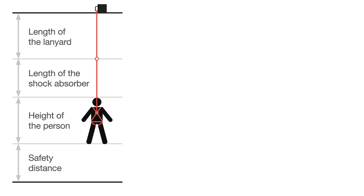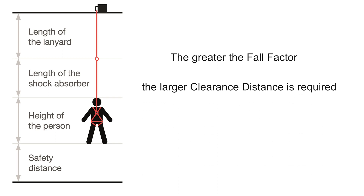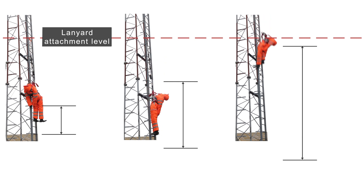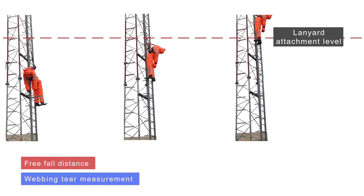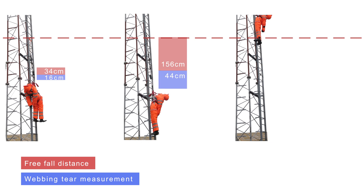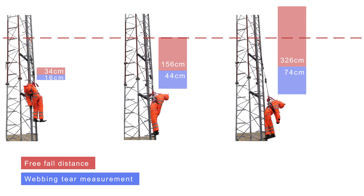In summary, the greater the fall factor, the larger the clearance distance that is required. The example in the video shows the realistic clearance distance required between the climber's feet and the ground for fall factor 0, fall factor 1, and fall factor 2. This distance also includes the safety margin. The biggest benefit of a high anchor point attachment can be seen when measuring the free fall distance and the length of the deployment.